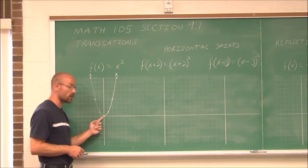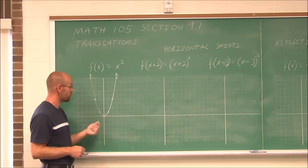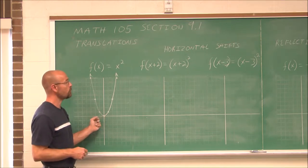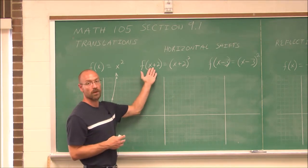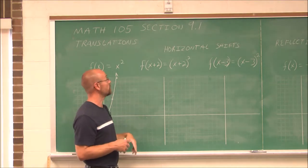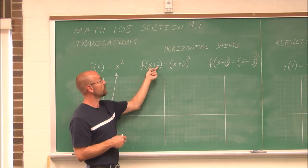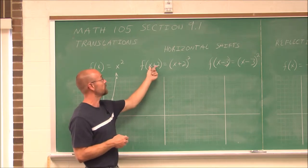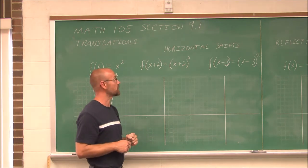This is our standard library function f(x) = x², and we plotted points to find that. Just to redefine something from chapter 7, this lowest or highest point of any parabola is called the vertex. Our vertex here was (0, 0). What would happen if we changed our input value — what if I substituted in x plus 2? Instead of having x squared, I have x plus 2 squared. How does that change the graph?